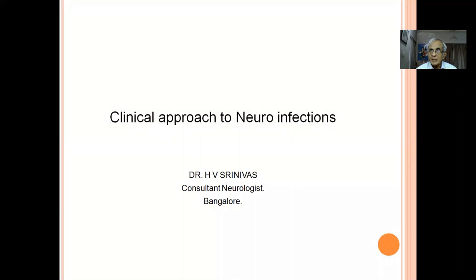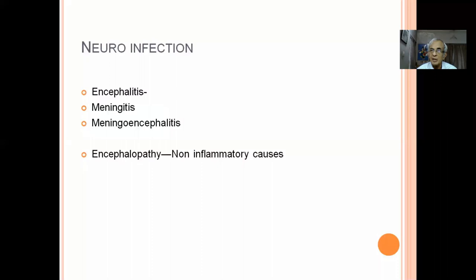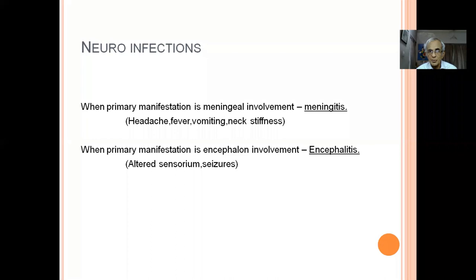Neuro-infection is one clinical situation where definite treatment is available in certain types. Neuro-infection means infection of the brain — that is encephalitis — infection of the meninges — meningitis — or usually a combination of the two: meningoencephalitis. Encephalopathy means disordered function of the brain from non-inflammatory causes, whereas encephalitis is inflammation usually due to infection. Classically, the meninges being pain-sensitive structures, infection causes severe headache, fever, vomiting, and neck stiffness.